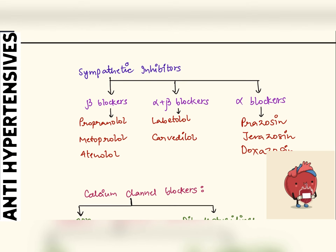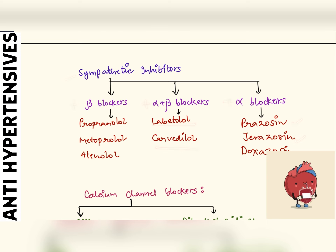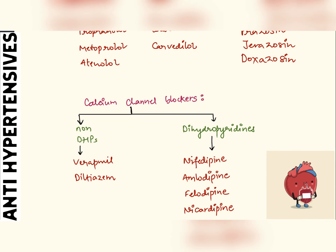Sympathetic inhibitors include beta blockers, alpha plus beta blockers, and alpha blockers. Alpha blockers include prazosin, terazosin, and doxazosin. Alpha plus beta blockers include labetalol and carvedilol. Beta blockers include propranolol, metoprolol, and atenolol.